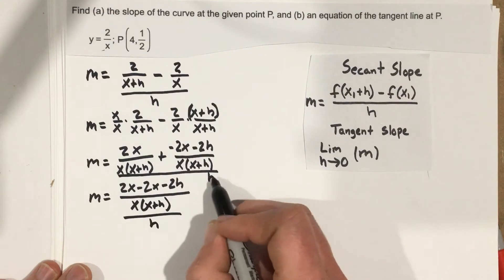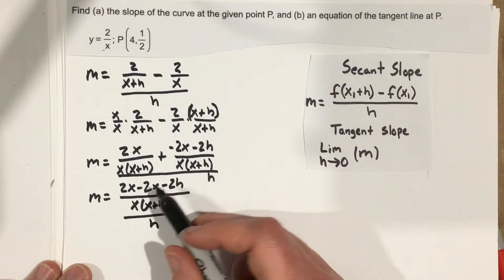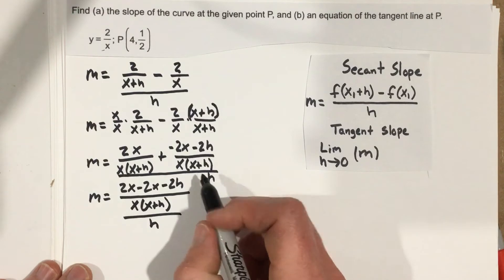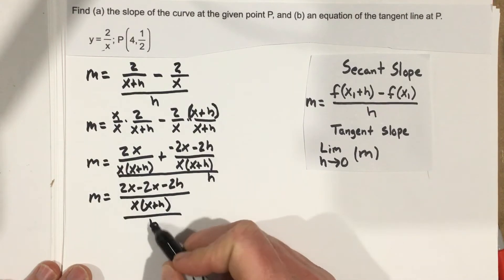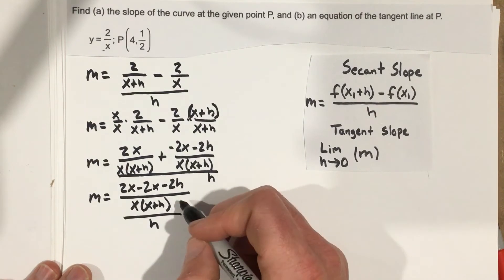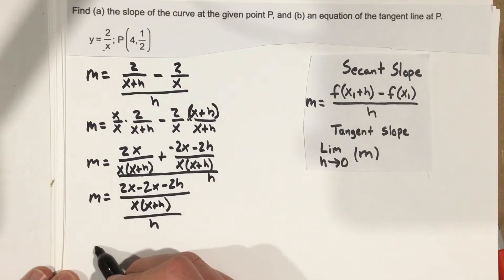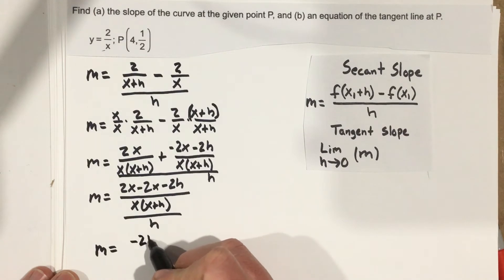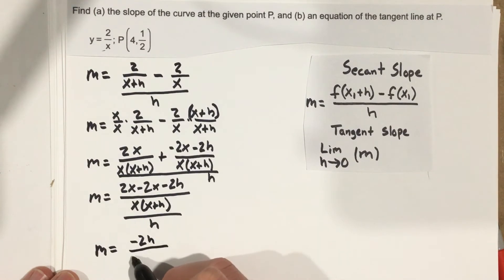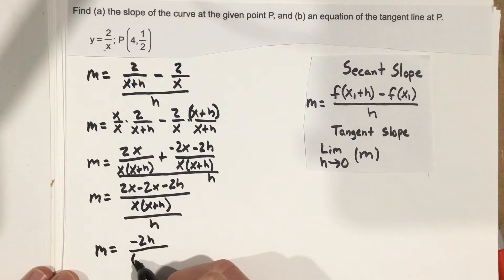It's easy to forget about the h when you're messing around with the top the whole time, but it's important to make sure you get it back in there. The 2x and the 2x are going to cancel, and we're left with m equals negative 2h over x times x plus h.